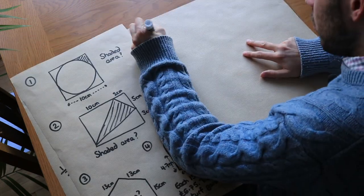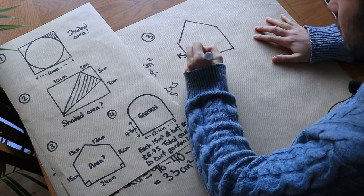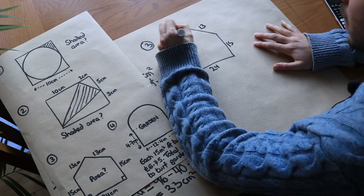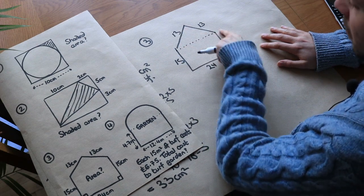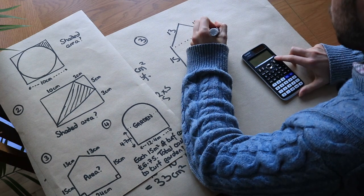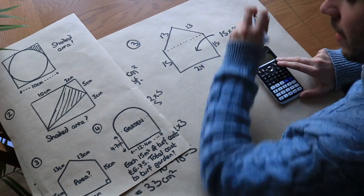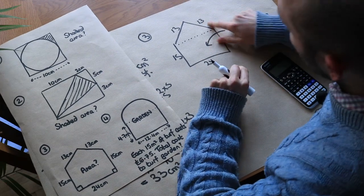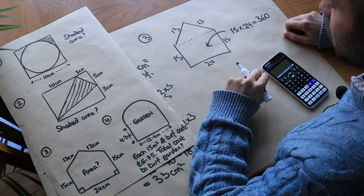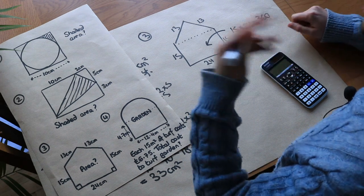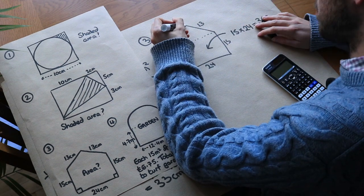Now question three — this is a bit harder because we actually have to use Pythagoras' theorem. Drawing it out: we have 15 centimetres, 24, 15, 13 and 13. The easiest way to find the area is to cut the shape into a rectangle and a triangle on top. The area of the rectangle is simply 15 times 24, which is 360 centimetres squared. But for the triangle — although we know the base is 24, we don't know the perpendicular height. Remember, area of a triangle is half times base times perpendicular height, and this 13 is not the height.